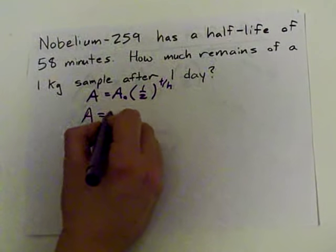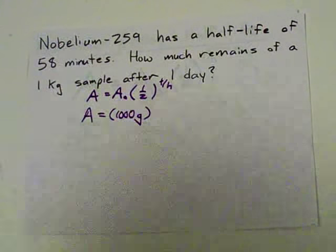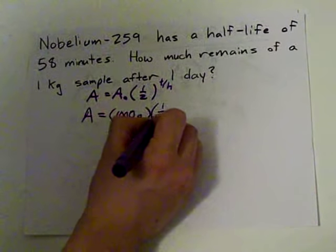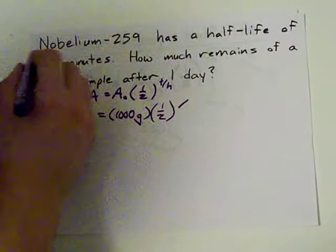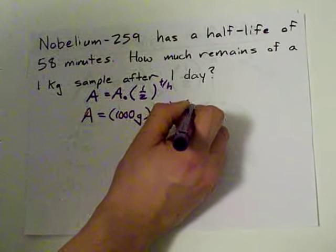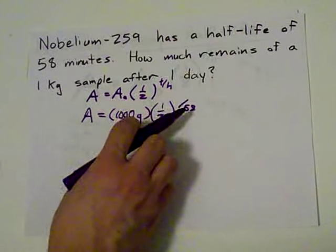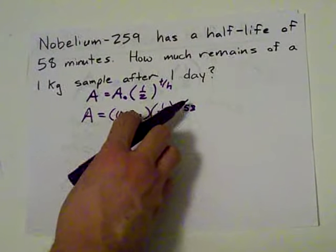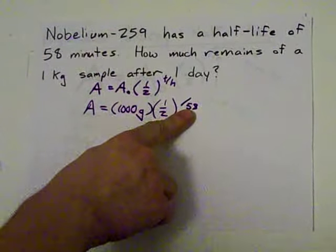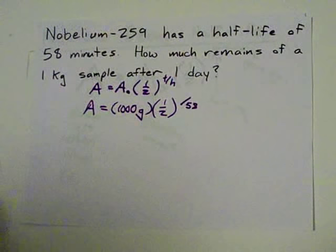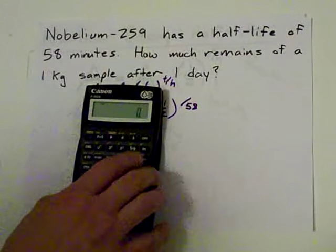The amount we're left with is the starting amount. I'm going to write it as 1,000 grams. Times a half to the power of time. How much time has gone by? One day. What's the half-life? 58 minutes. Guys, I do not care what units you use in this T-H ratio, as long as T and H are in the same units. Now, the half-life is 58 minutes, and I've written it in minutes, so I've got to put the time gone by in minutes. But I was given that it was one day.